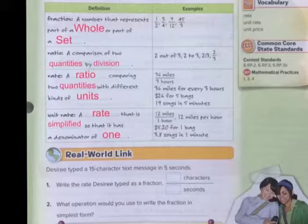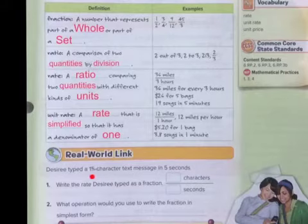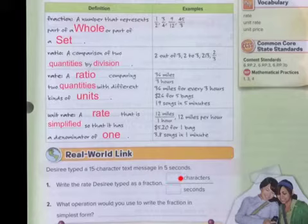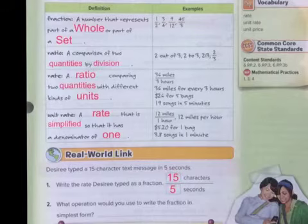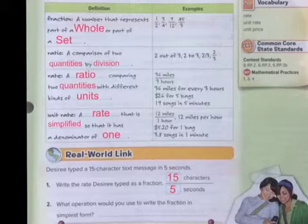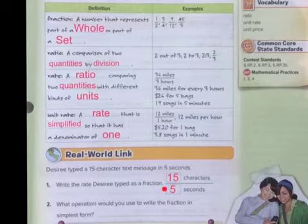Now let's practice. Desiree typed 15 character text messages in five seconds. So 15 in five seconds, right? So what do we need to do in order to simplify this? Well, as I mentioned in the previous video, you have to look at the first number and see if the second number is a factor of the first number. Five is a factor of 15. So if I were to divide it, I would get three over one.